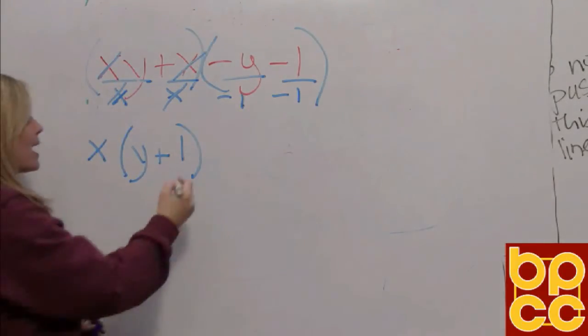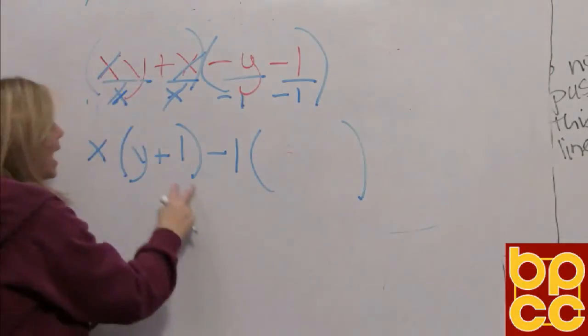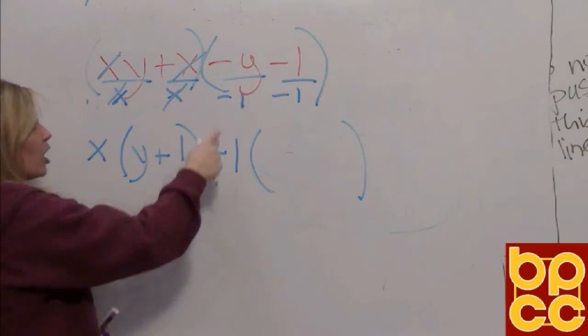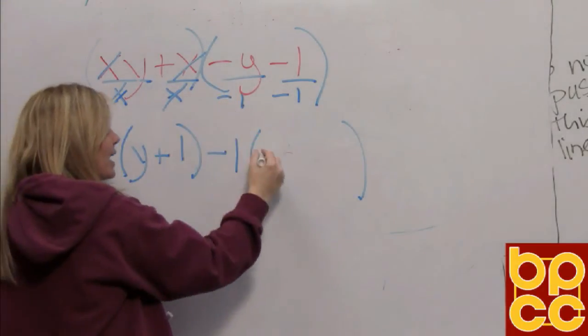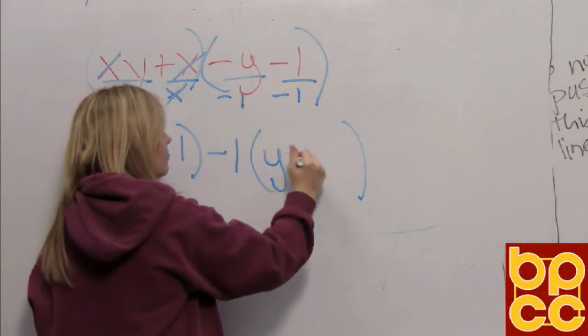Why would we want to divide them by a negative 1? Because we want to make a parentheses and we want in this parentheses exactly what's here, a positive and a positive. And as you all know, a negative divided by a negative is a positive. A negative divided by a negative is a positive.